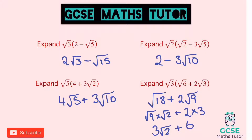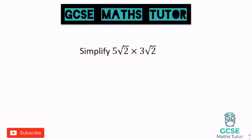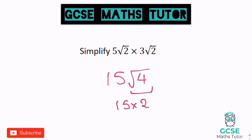Now one last question for you to have a go at, just to review all of this. Pause the video and I'll go over the answer. Okay, here we go: 5 times 3 is 15, and √2 times √2 is √4. So we get 15√4 — the square root of 4 is 2, so it's 15 times 2, which is 30.